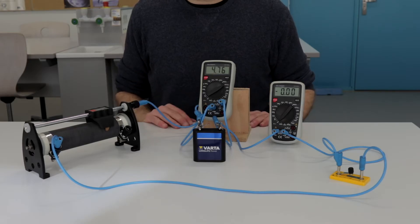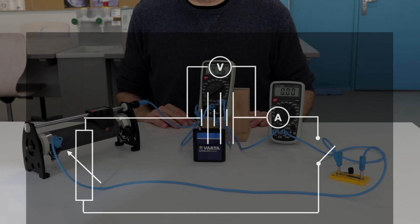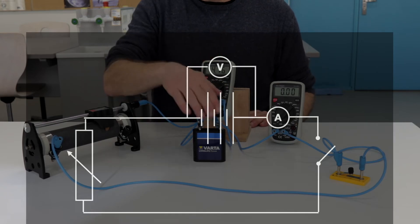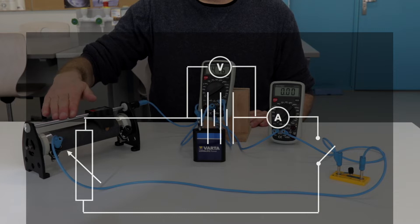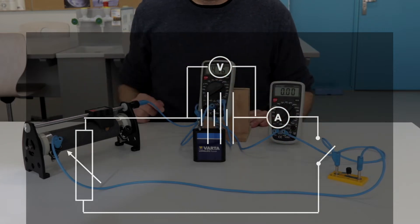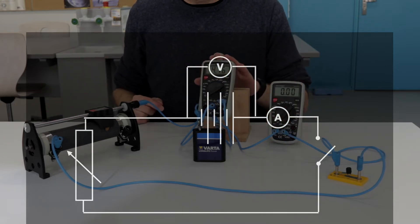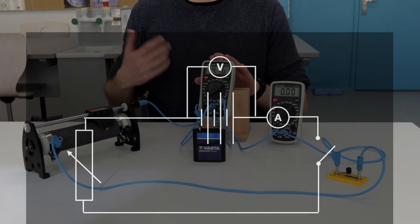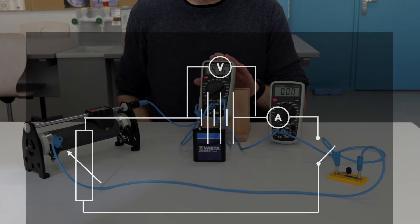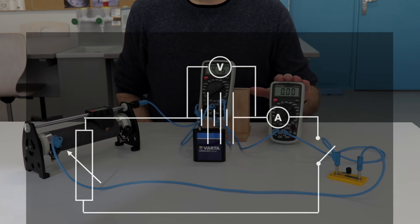Here is the circuit diagram. I have here a battery, a variable resistor, and a switch. In parallel with the battery I have a voltmeter, so the multimeter is set up as a voltmeter, and in series in the circuit I have an ammeter to measure the current.